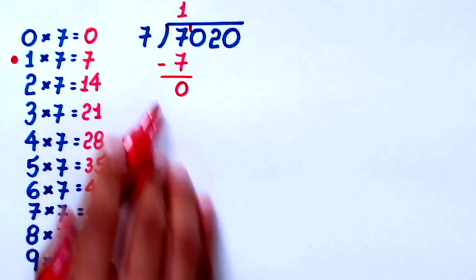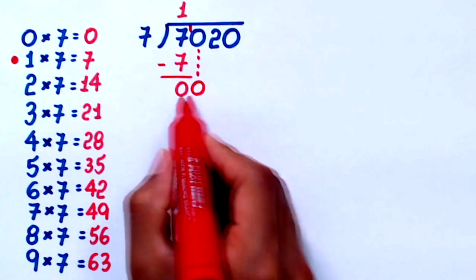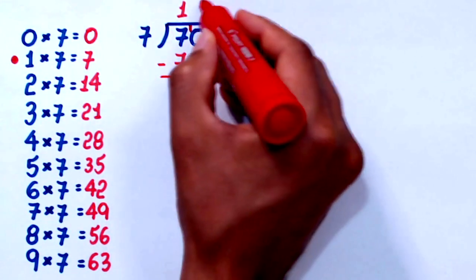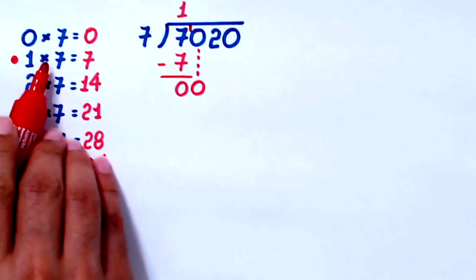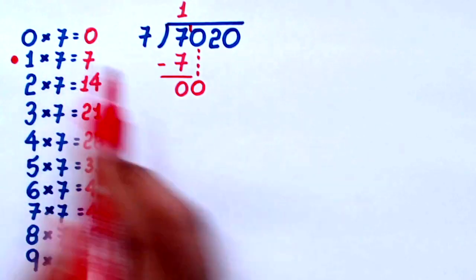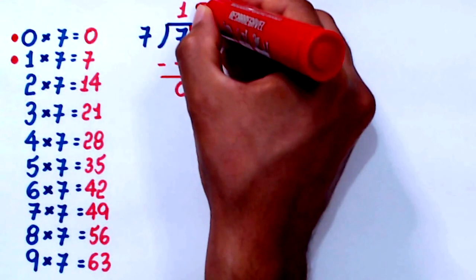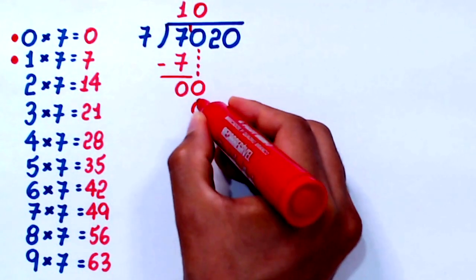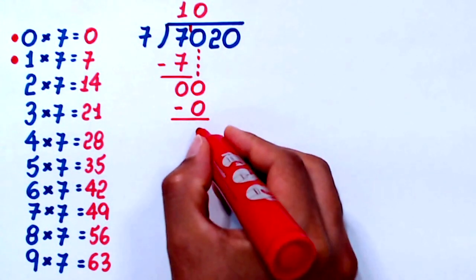After the subtraction, I bring down the next digit. By doing so, here I have 0. How many times does 7 go into 0 without going over? 1 times 7 is already too much, so the number we were looking for is 0 itself. I will write 0 here. Since 0 times 7 equals 0, I write it here and then I subtract. 0 minus 0 is still 0.